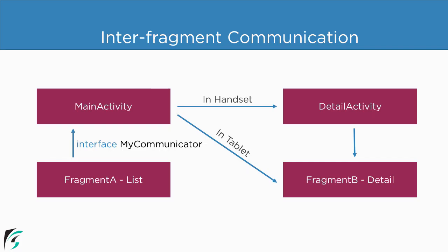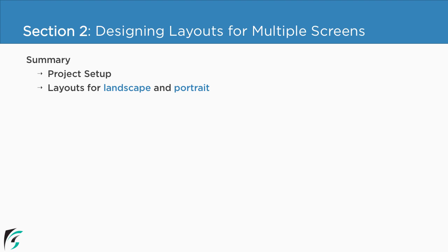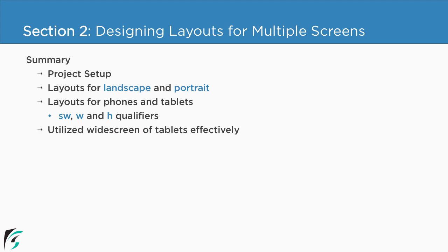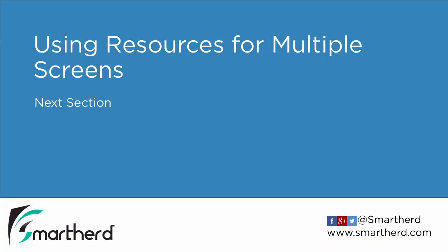I hope things are now clear. With this, we have reached the end of this section. Let us summarize: firstly, we did the project setup. Then we learned how to design layouts for landscape and portrait orientation, and also how to design separate layouts for phones and tablets using SW, W, and H qualifiers. We also learned how to utilize widescreen tablets by implementing dual pane functionality, and we learned what is inter-fragment communication. In the next section, we will learn how to use resources for multiple screens. Thanks for watching and have a nice day!